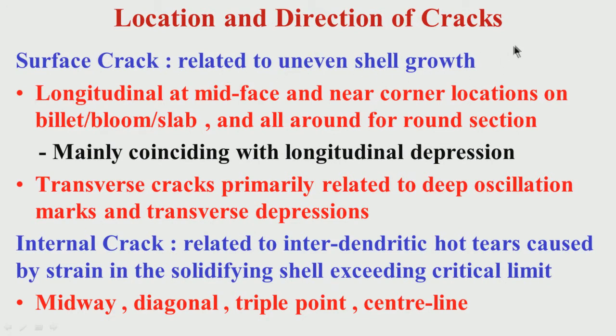What are the types of cracks which will form? They can form on the surface of the cast product, so we call them surface cracks. These are basically related to uneven shell growth. Sticker type of grades do not indicate uneven shell growth, but depression type of characteristics — for around 0.1 percent carbon or 304 stainless steel — we have uneven shell growth along the large area of the periphery of the mould. Because of that, there is a possibility of surface crack formation.